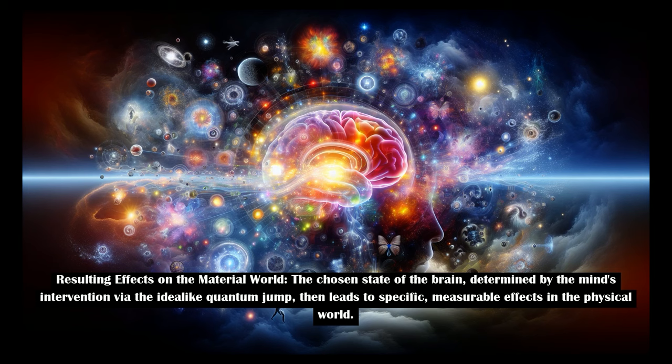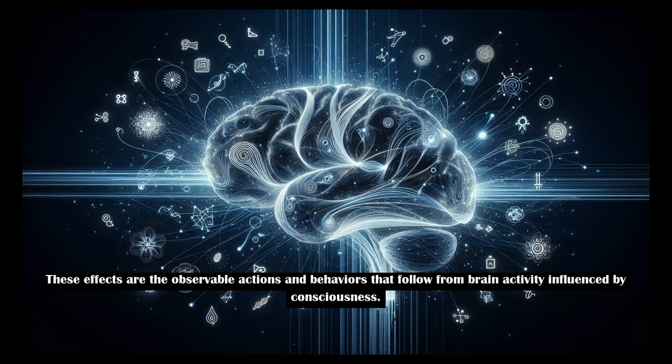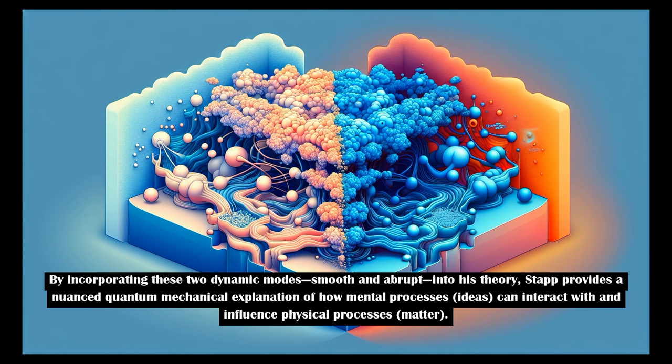The chosen state of the brain, determined by the mind's intervention via the idea-like quantum jump, then leads to specific, measurable effects in the physical world. These effects are the observable actions and behaviors that follow from brain activity influenced by consciousness.